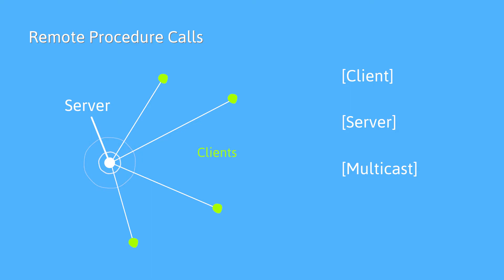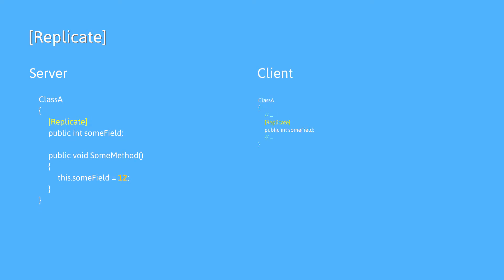This might seem confusing at first, but it's not that difficult. Replicate is another network-based attribute that Facepunch will provide for Sandbox. However, this attribute does not target functions — it targets fields. Its sole purpose is to synchronize values from the server to the client, acting similarly to RPCs except it only changes the value of its targeted field. The dev blog mentions that Replicate can target both value types and reference types, making it a powerful tool for game synchronization between clients and servers.